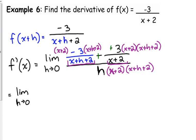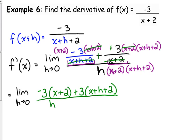That's where most people mess up. So, in our first term, the x plus h plus 2 cancels. So, we've got negative 3 times x plus 2. In our second term, the x plus 2 cancels. So, we have plus 3 times x plus h plus 2. And, that's all over h times x plus 2 times x plus h plus 2.